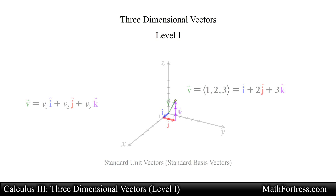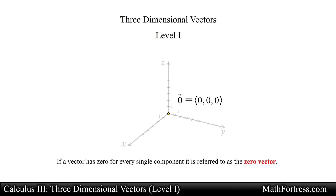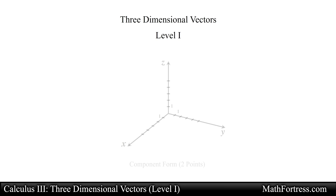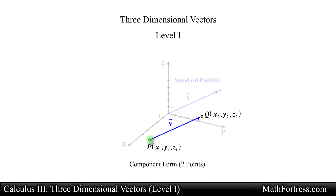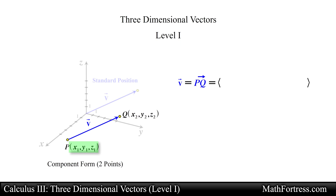If a vector has 0 for every single component it is referred to as the zero vector and can be represented by a single point. Now if a vector is not in standard position with the tail located at the origin, and it is instead represented by two points in space — point P for the tail or initial point and point Q for the head or terminal point — then we can find the component form of vector v by subtracting the coordinates of the initial point from the coordinates of the terminal point.